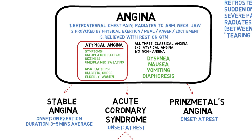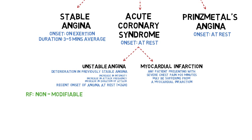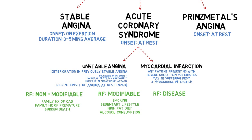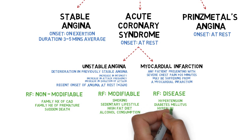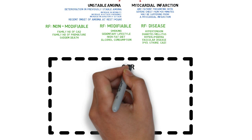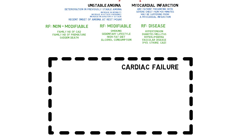The risk factors for coronary artery disease can be divided into three groups: non-modifiable risks, modifiable risks, and disease-related risks. Non-modifiable risks include family history of coronary artery disease and history of premature or sudden death in the family. Modifiable risks are more related to the patient's social history, such as smoking, sedentary lifestyle, high-fat diet, and alcohol consumption. Diseases contributing to coronary artery disease are hypertension, diabetes mellitus, hyperlipidemia, and any already established vascular disease such as peripheral vascular disease or stroke. Remember that acute coronary syndrome is the culminating result of long-standing chronic disease such as hypertension and diabetes mellitus that form the atherosclerotic plaque.